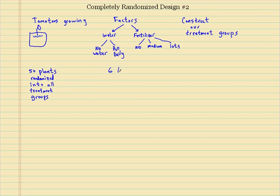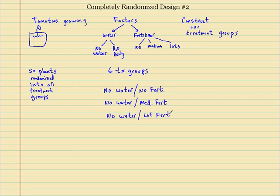So let's go ahead and figure out all of our treatment groups. And I believe we will have six treatment groups. You just restrict one and do it with all three, and then do the other one with all three. So I'll say no water slash no fert, no water slash medium fertilizer, and no water slash lots of fertilizer.